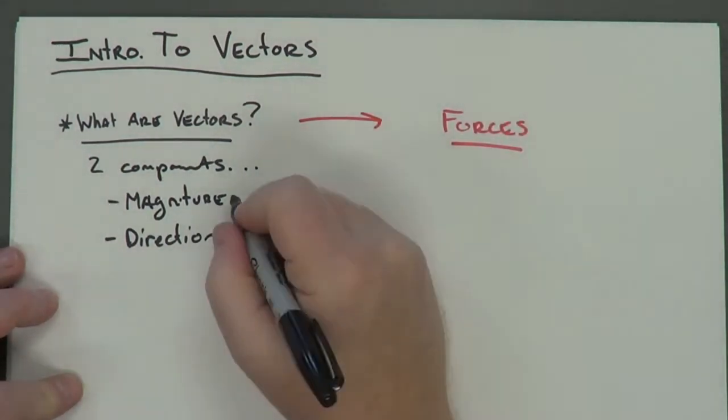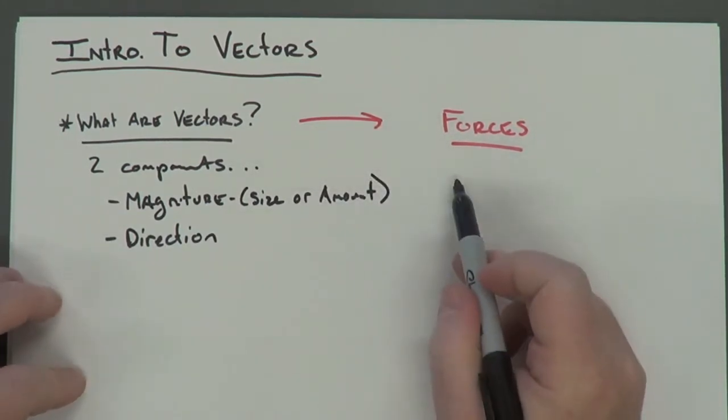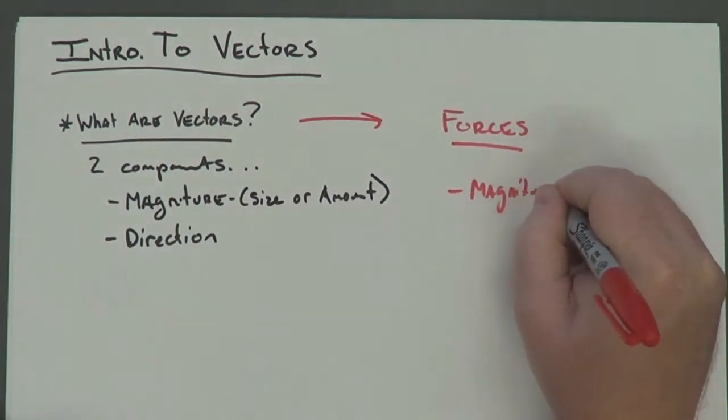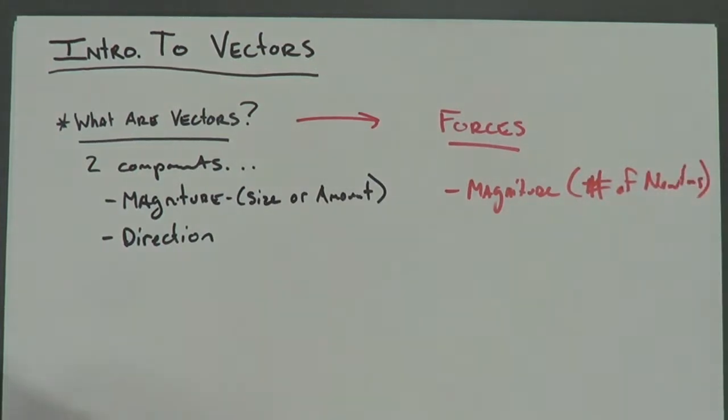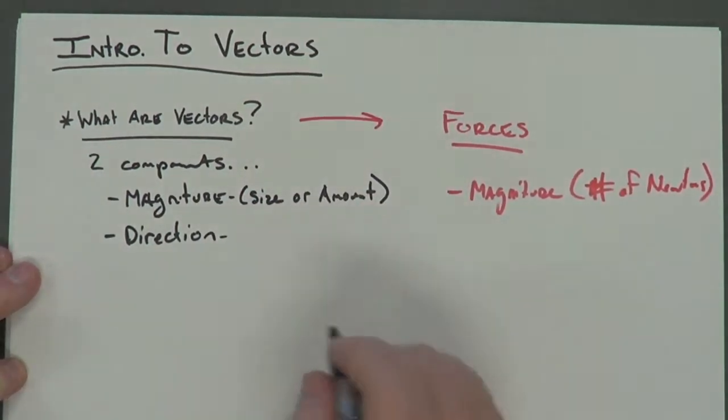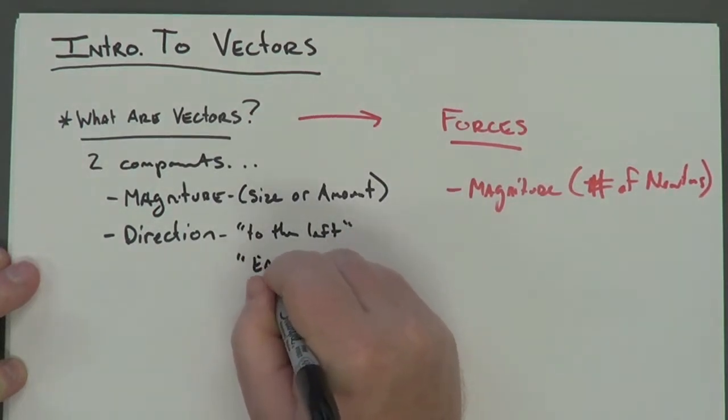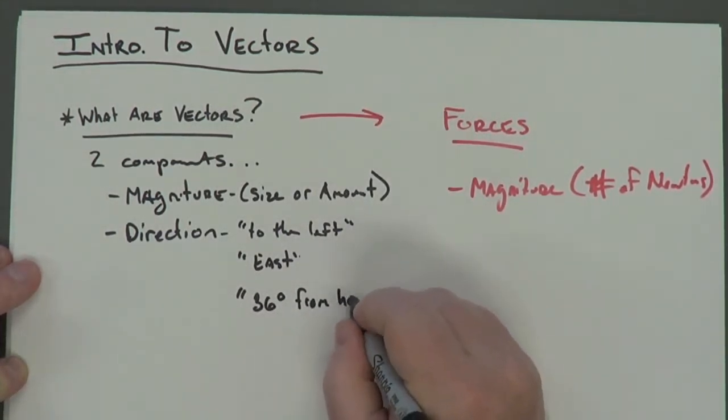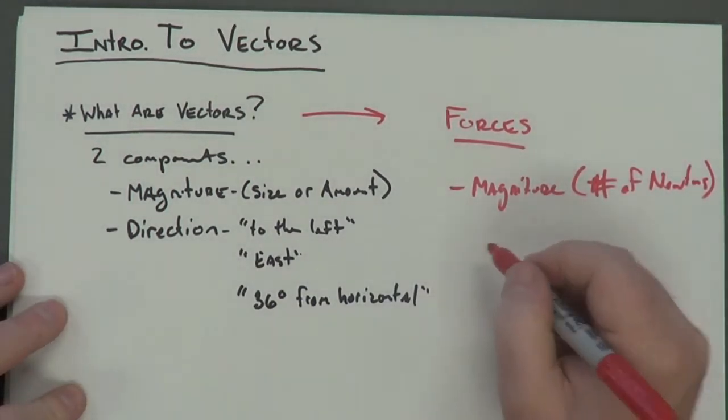Okay? So if you think about what magnitude is, magnitude is the size or amount. So if someone asks you, if you have a force and someone asks you what is the magnitude of the force, the magnitude would be the number of newtons that that force has. So if it's a five newton force, the magnitude would be five newtons. Now, and then you have direction, which is pretty obvious. There's several different ways you could write that. You could say something like to the left, you could say east, or if you're getting even more specific, you could say 36 degrees from horizontal.